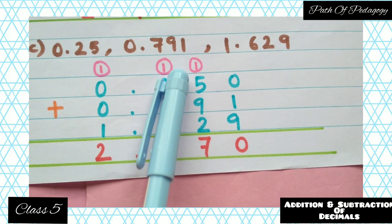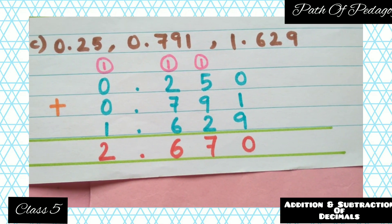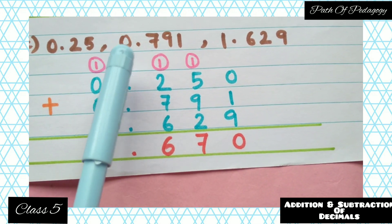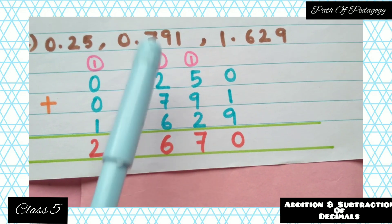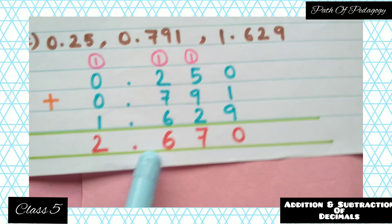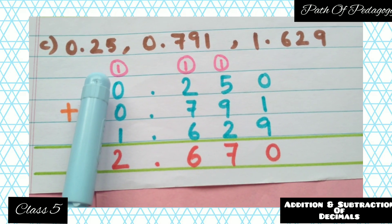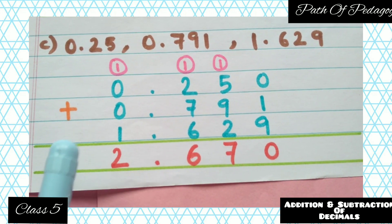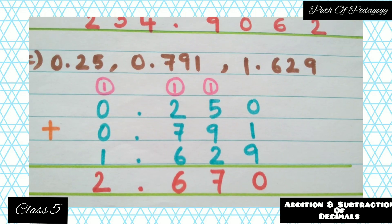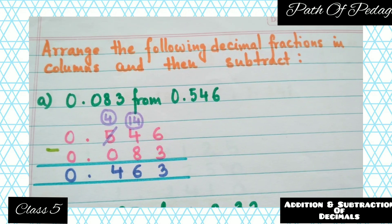Now add: 0+1+9=10, so write 0 and carry 1; 1+5+9+2=17, write 7 and carry 1; 1+2+7+6=16, write 6 and carry 1; 1+0+0+1=2. So the answer is 2.670. Move on to the next set of questions.